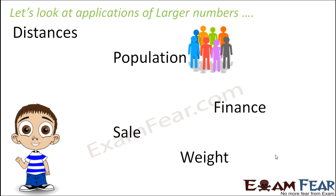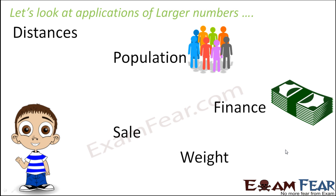We'll look at where we use such huge numbers. There are certain sectors where we often make use of larger numbers. For example, when we talk about the population of a city — forget about a country or the entire world — even the population of a small locality turns out to be in thousands or lakhs. When you talk about finance and money matters — buying a house, a car, or doing savings in your bank — you talk about huge numbers like 5 lakhs or 50 lakhs.